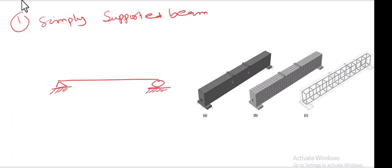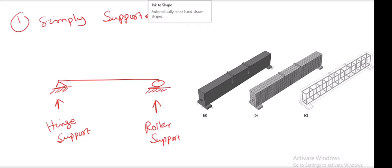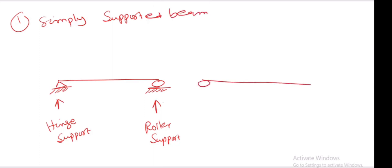On the right-hand side there is a roller support and on the left-hand side there is a hinge support. In any other case, if the roller support moves to the left and the hinge support moves to the right, that type of beam is still called a simply supported beam, because the beam still rests on two end supports.